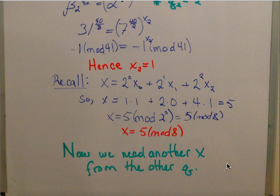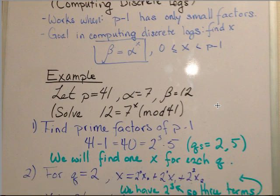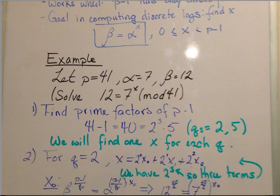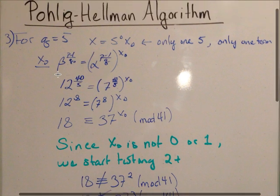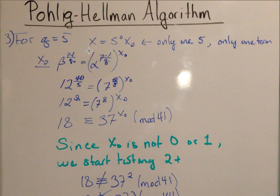Now we'll go on to the next step. We need to find another x from the other q. Our q's were 2 and 5. We're going to use q equals 5 now. However, we just have 5 to the first power. There's only one 5, so there's only one term. But this time, just one 5, so x will only have one term, starting at 5 to the 0 times x to the 0. So we only have that to solve for.